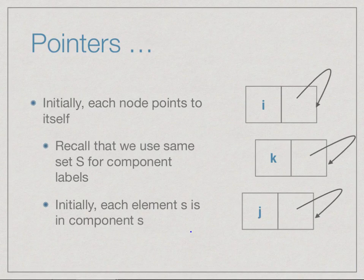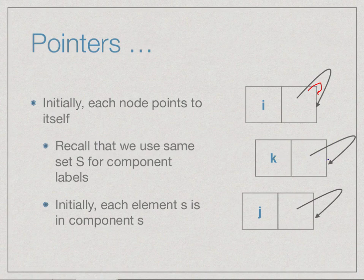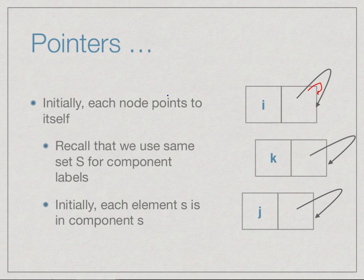Make-union-find initializes each component as a singleton: element i belongs to component i, represented by a node i which points to itself. Similarly, node k points to itself and node j points to itself. So we have n nodes, each containing its name and a pointer to itself, indicating it is a singleton component.